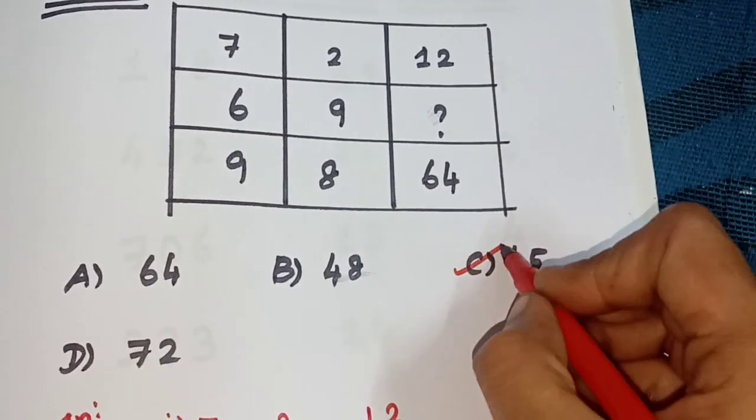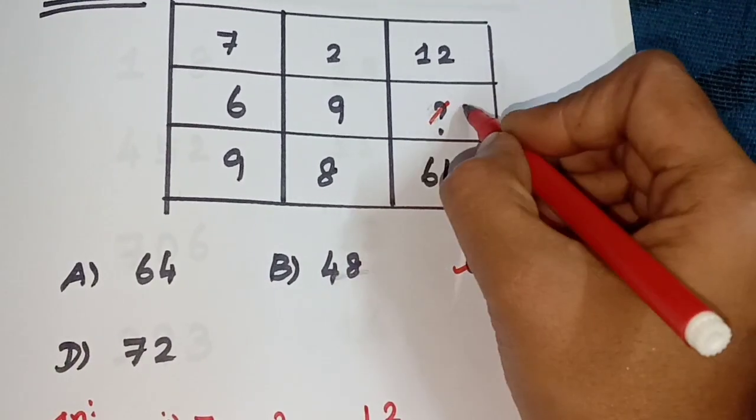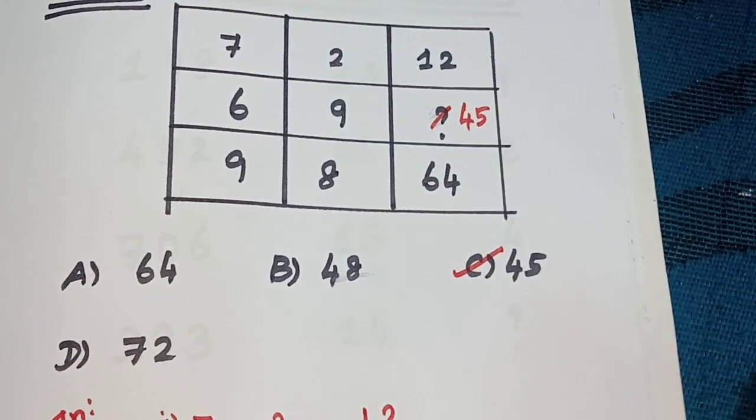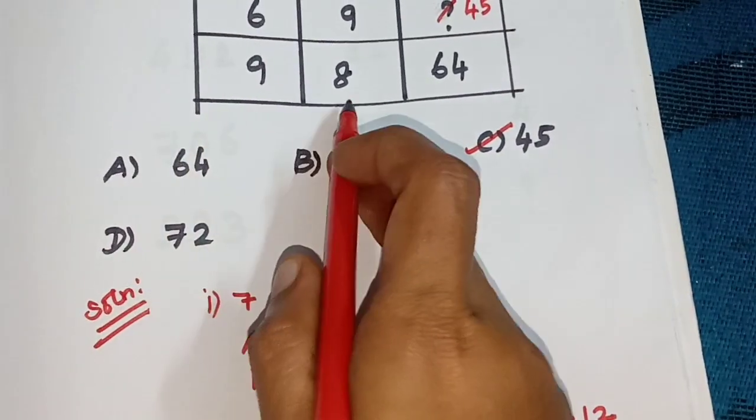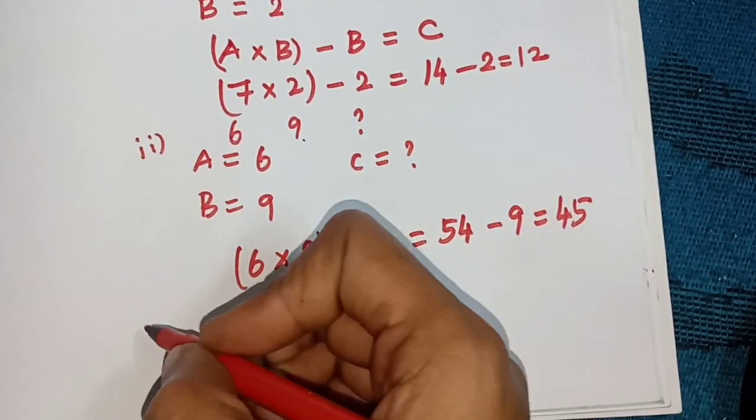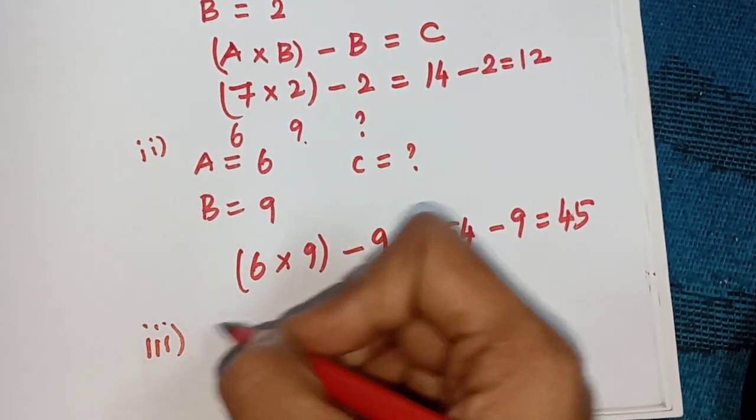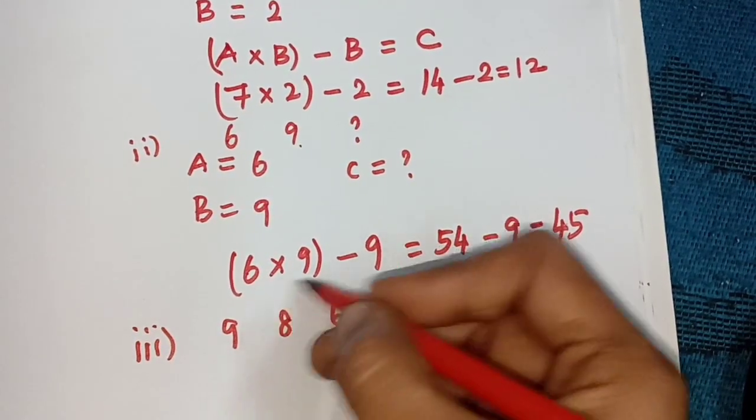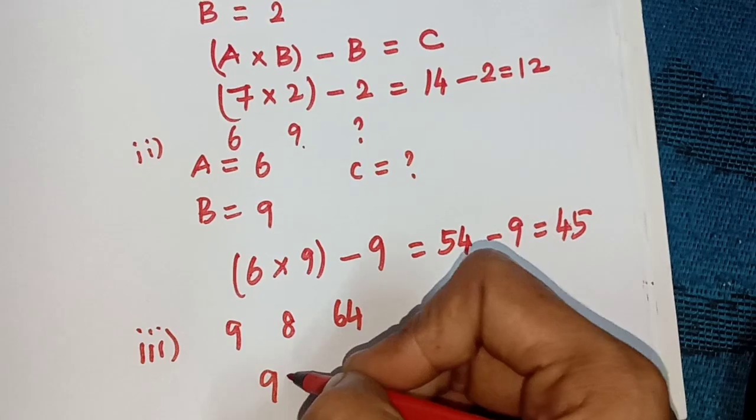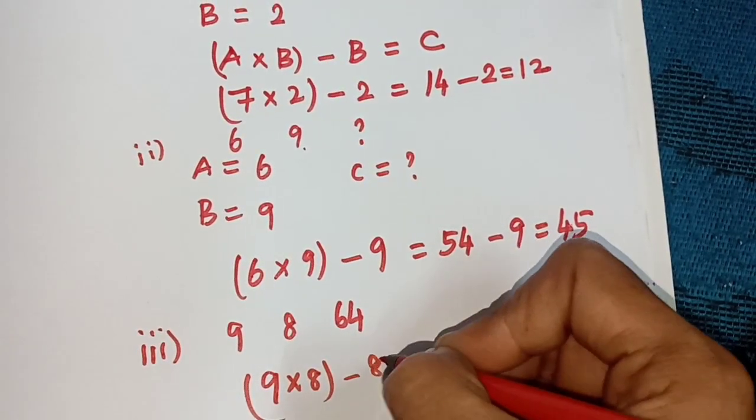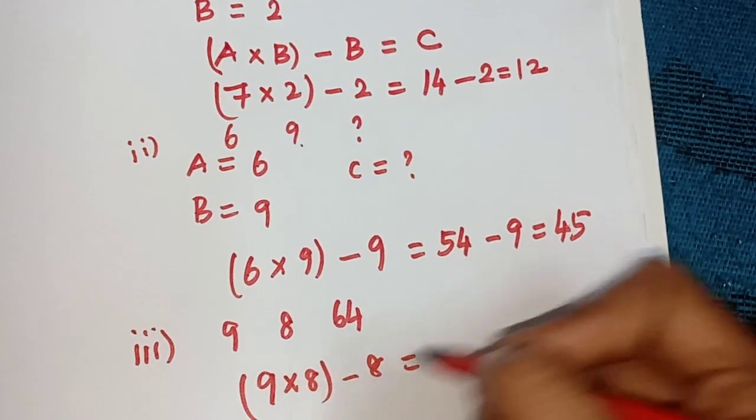And last one: 9, 8, 64. Same procedure: A into B, 9 into 8 minus B, minus 8.